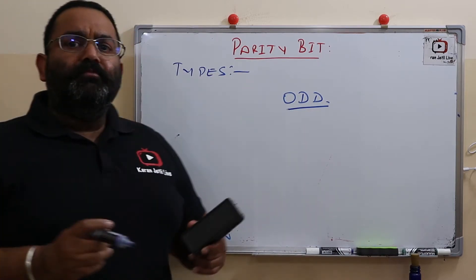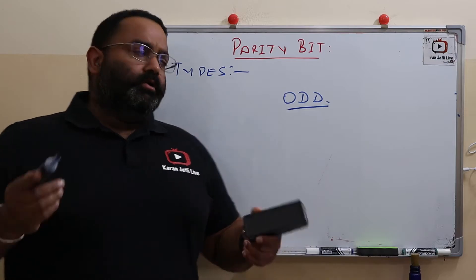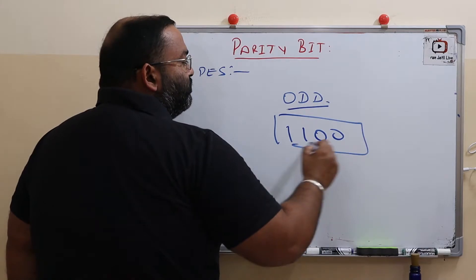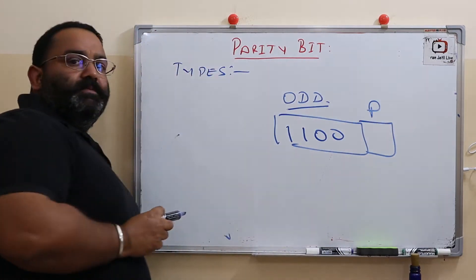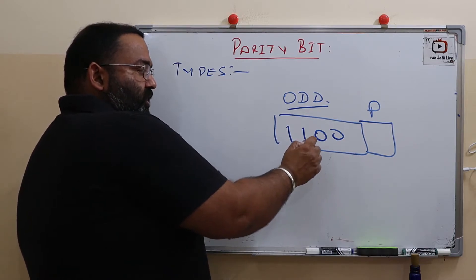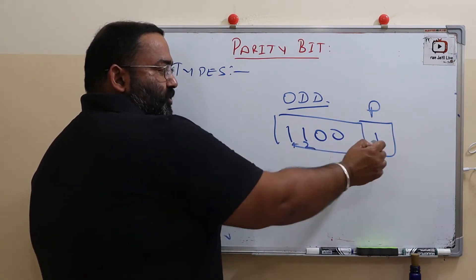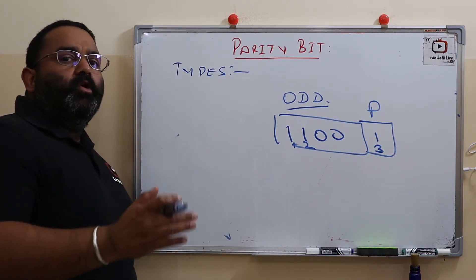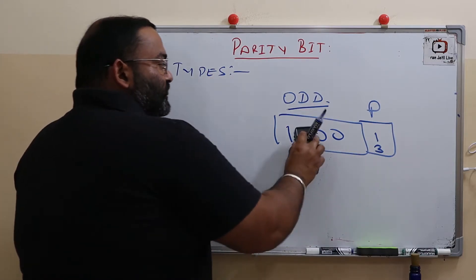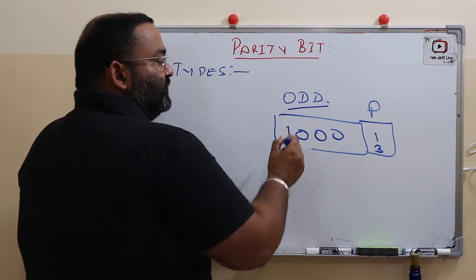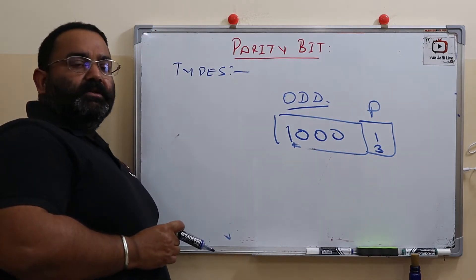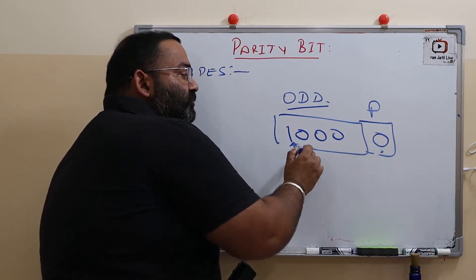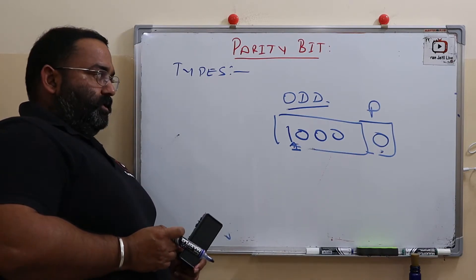Similarly, we have odd parity. In odd parity, we make the total number of ones odd. Suppose the data being transmitted has two ones. The parity bit should be one, making the total number of ones three — which is odd. In another example, if the data already has one one, the parity bit should be zero. The total number of ones remains one — which is odd. This is odd parity.